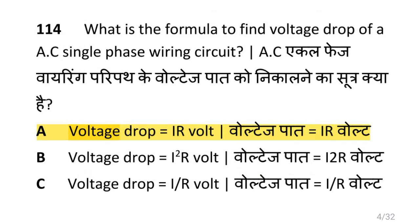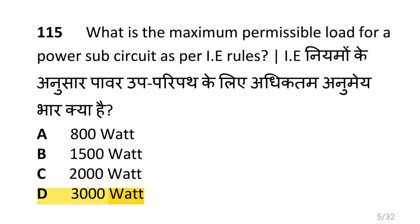What is the formula to find voltage drop of an AC single phase wiring circuit? Voltage drop is equal to I into R voltage, i.e., IR.